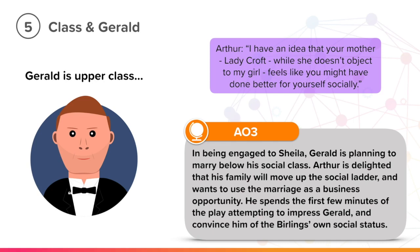Arthur, however, is delighted that his family will move up the social ladder and wants to use the marriage as a business opportunity. As Gerald's father owns a rival business, he spends the first few minutes of the play attempting to impress Gerald and convince him of the Birlings' own social status in order that he goes through with the marriage.